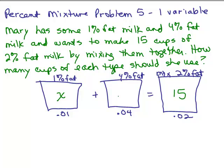So let's say in the 1% fat, we want x cups of milk. Then what would go in here for the 4% fat? I know that x plus whatever is in here has to add up to 15. So if the total is 15 and I've already used x cups in the 1%, like if that was 2 cups, there would be 13 left here.